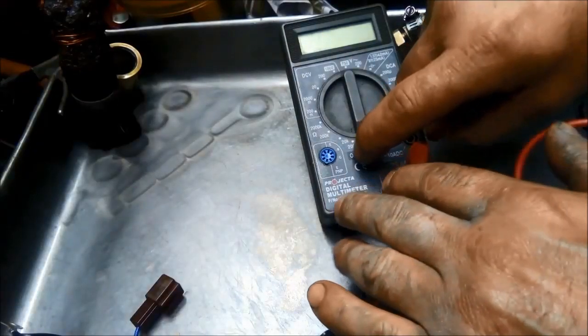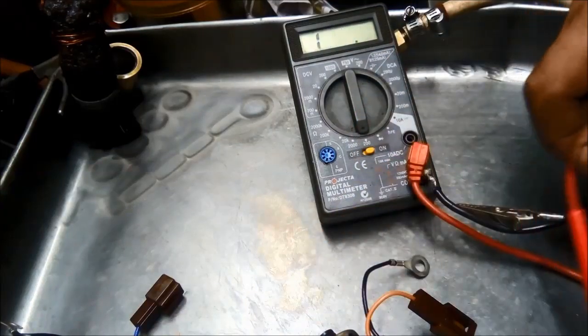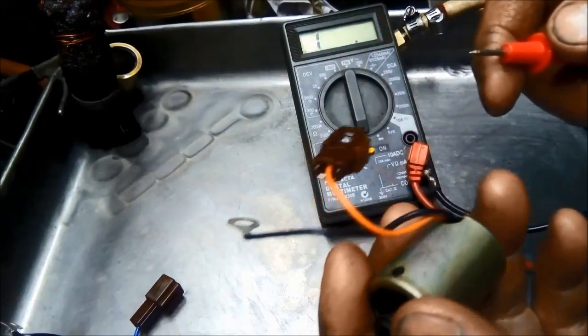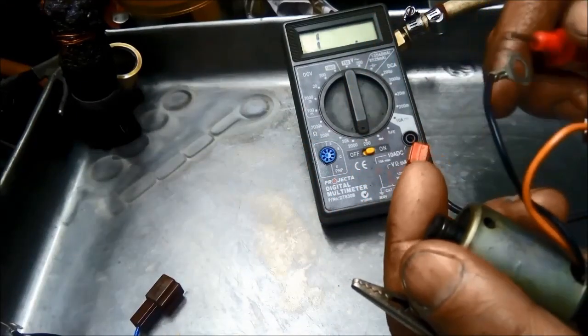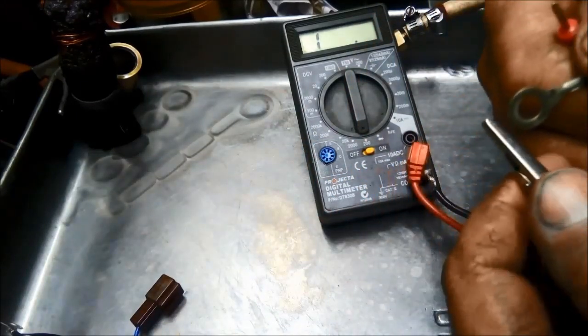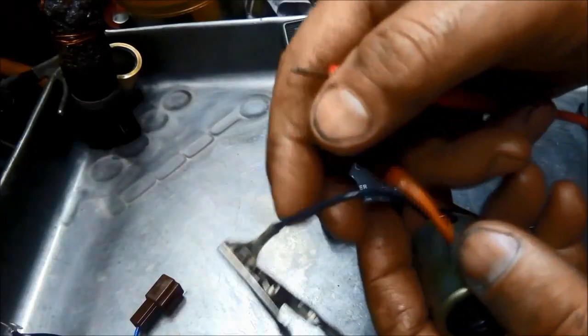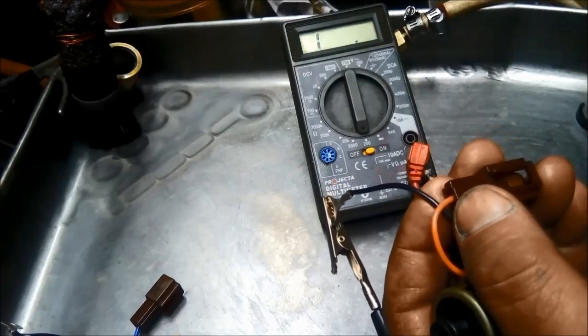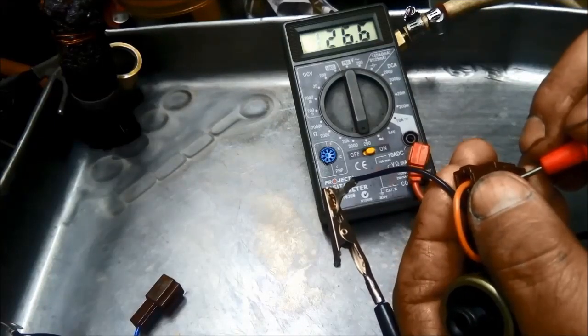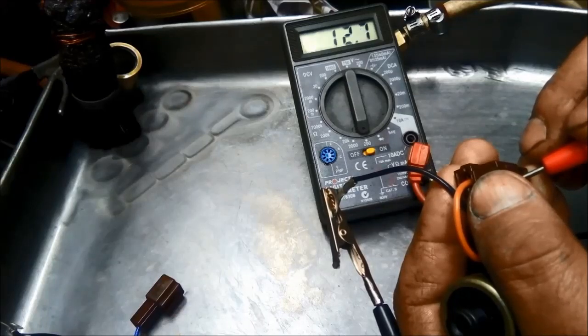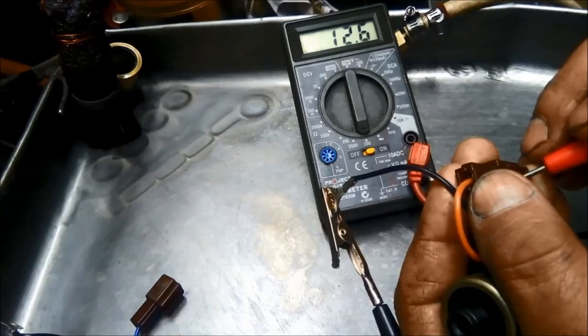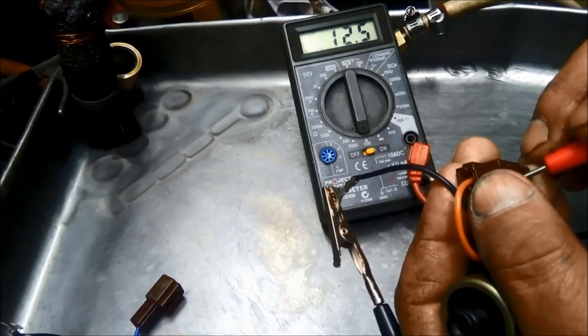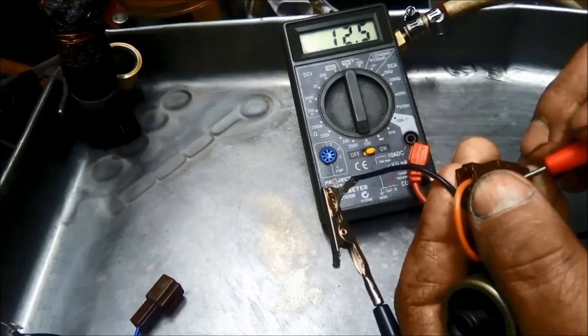First of all, we're going to check the specs on the resistance on them. Got the shift solenoid. We're going to just put black on black, and we should have between 10 and 16 ohms for this particular solenoid on the A340 transmission. Got 12.6, so we're well within the tolerances.